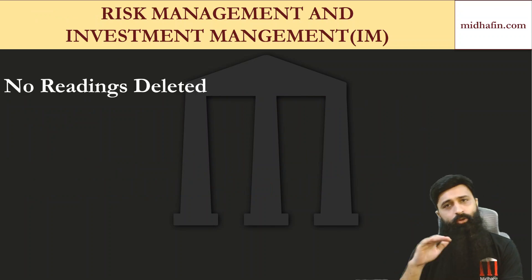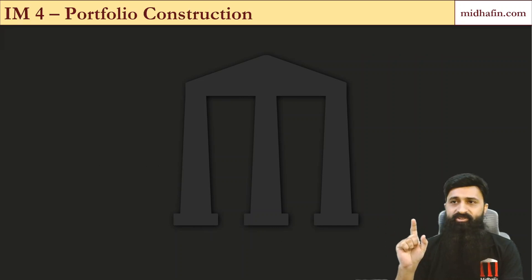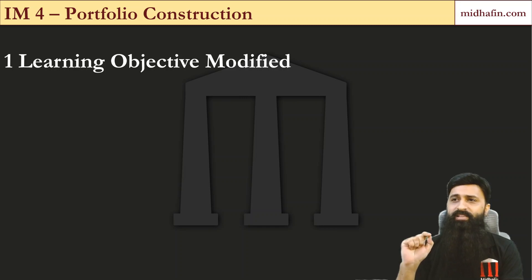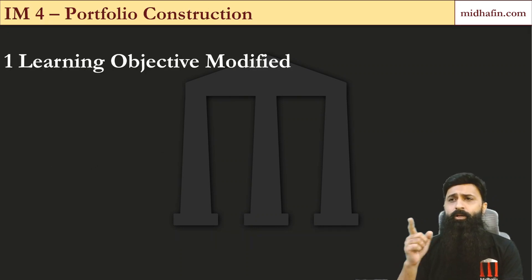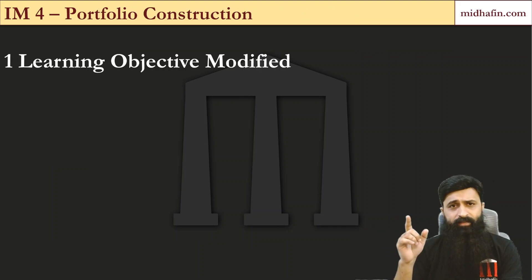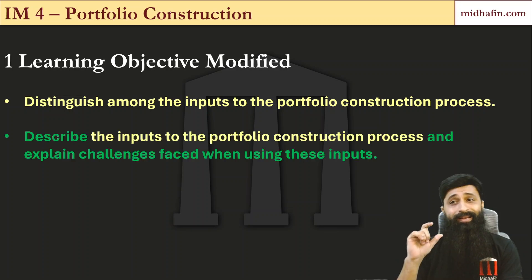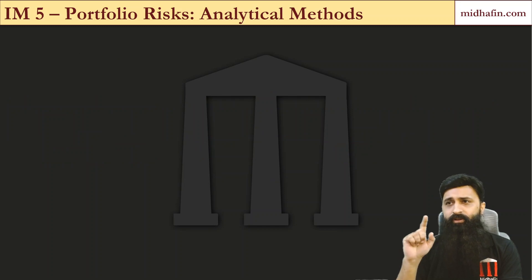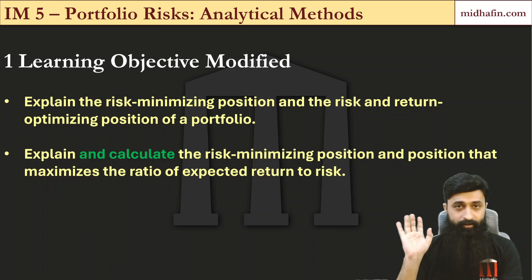In risk management and investment management: no readings deleted, no readings added, and two LOs modified. In IM4 (Portfolio Construction), the LO changed from 'distinguished among the inputs to the portfolio construction process' to 'describe those inputs and explain the challenges' — emphasizing the challenges dimension. In IM5 (Portfolio Risks: Analytical Methods), the LO changed from 'explain the risk minimizing position and the risk and return optimizing position' to 'explain and calculate' — meaning calculation is now explicitly required and important.